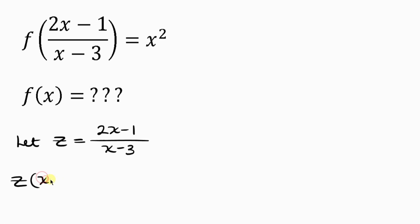So that means z will multiply (x-3) equals 2x minus 1. Now let's open up this bracket. So z times x is xz minus z times 3 is 3z equals 2x minus 1.